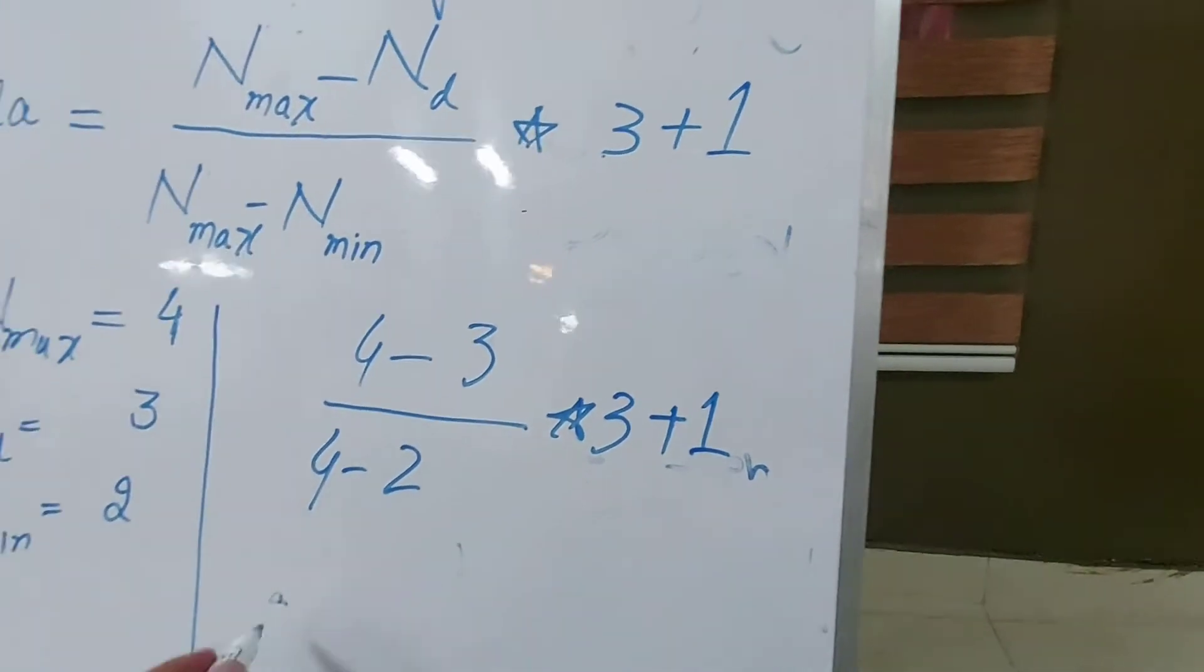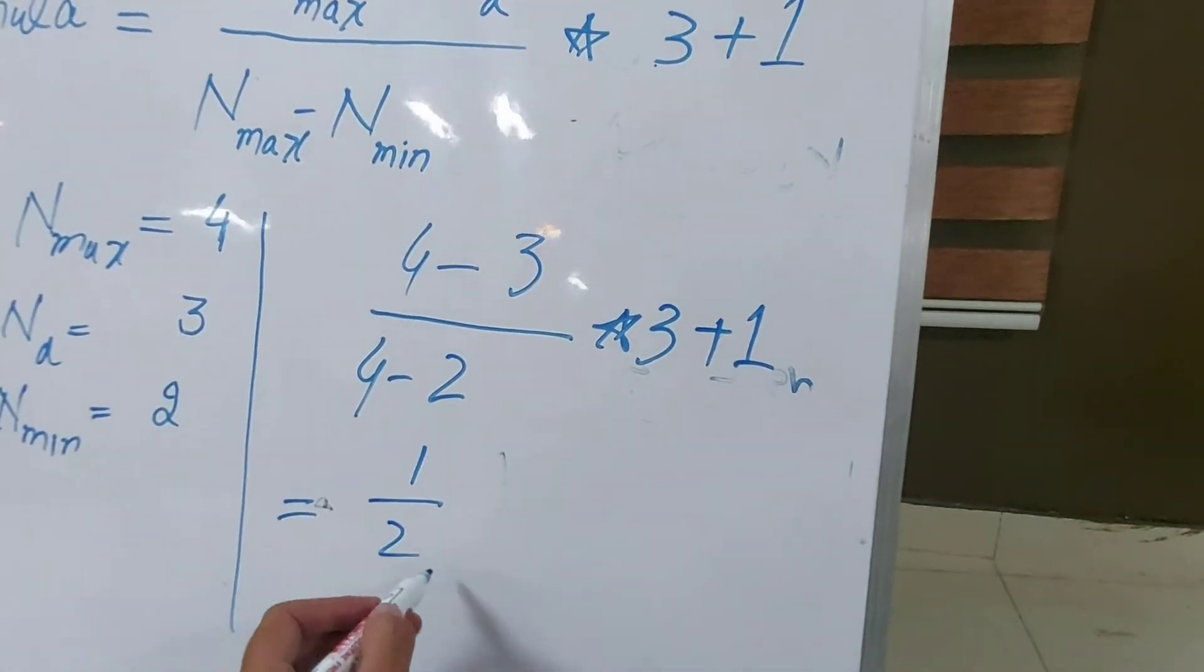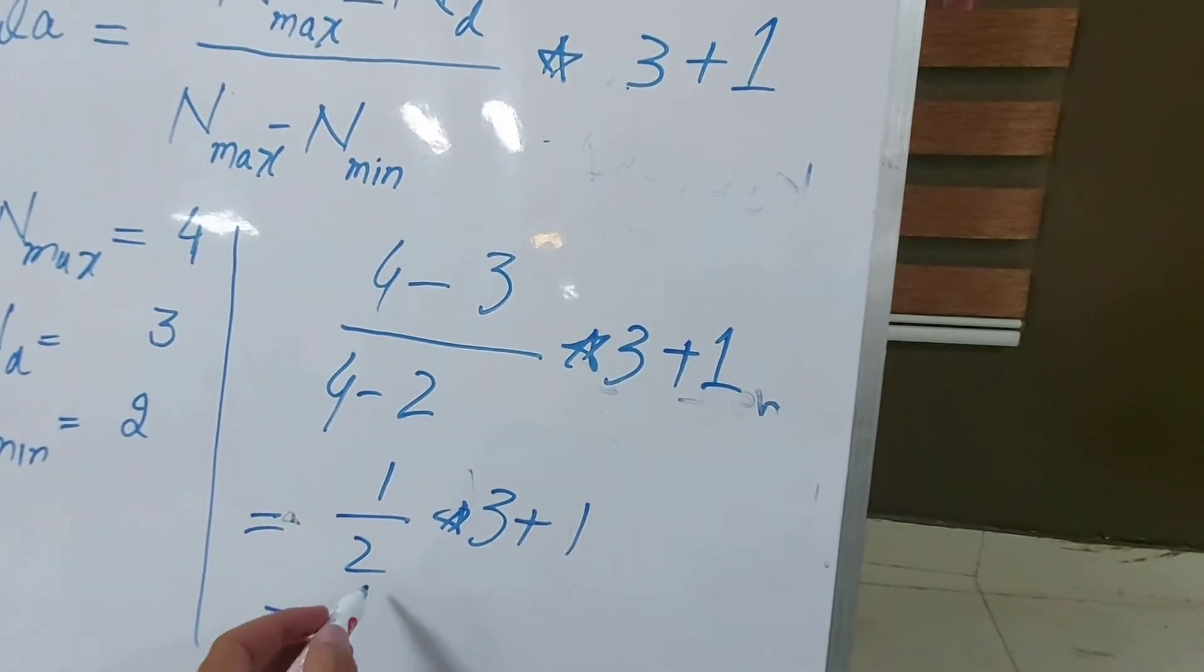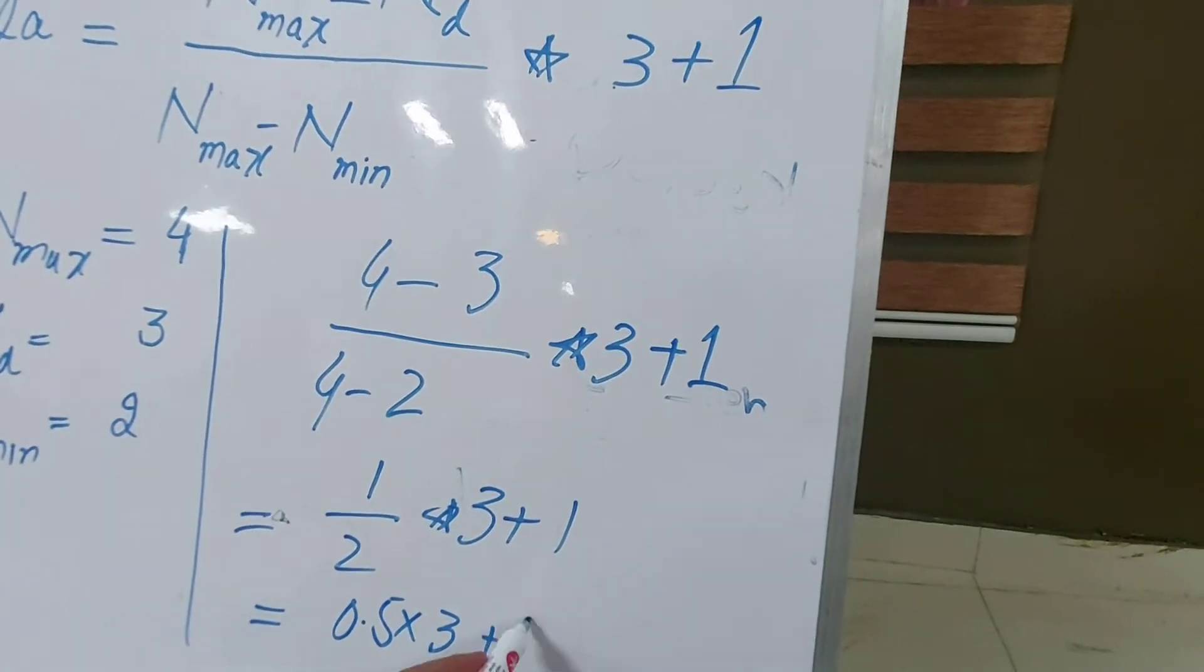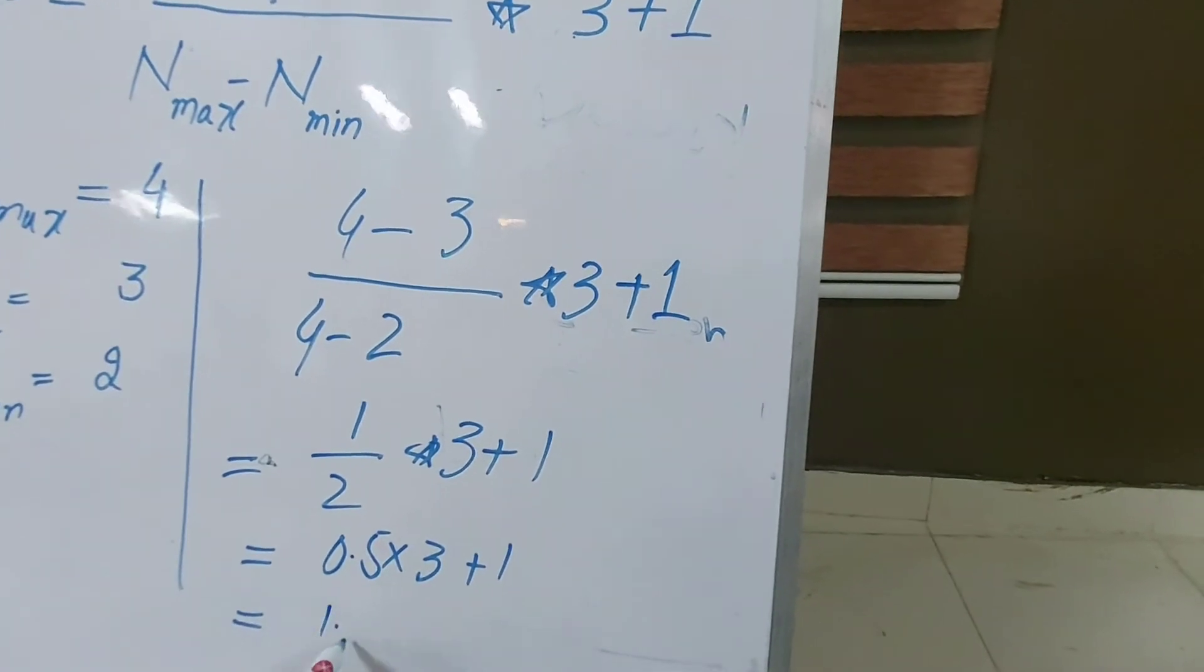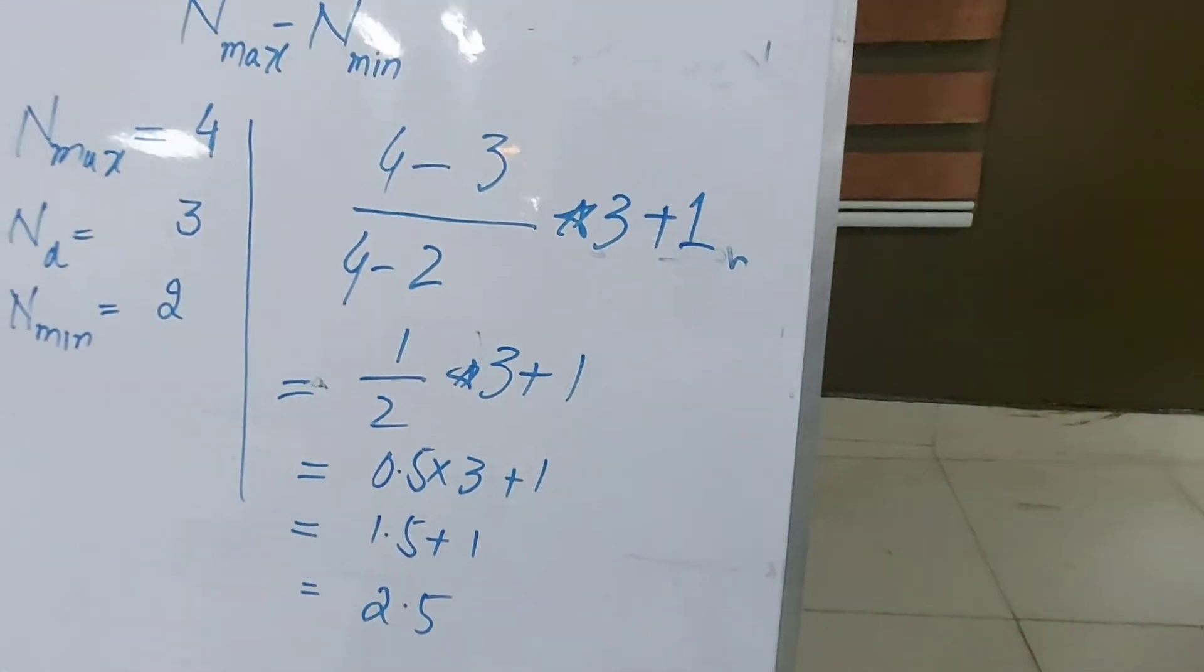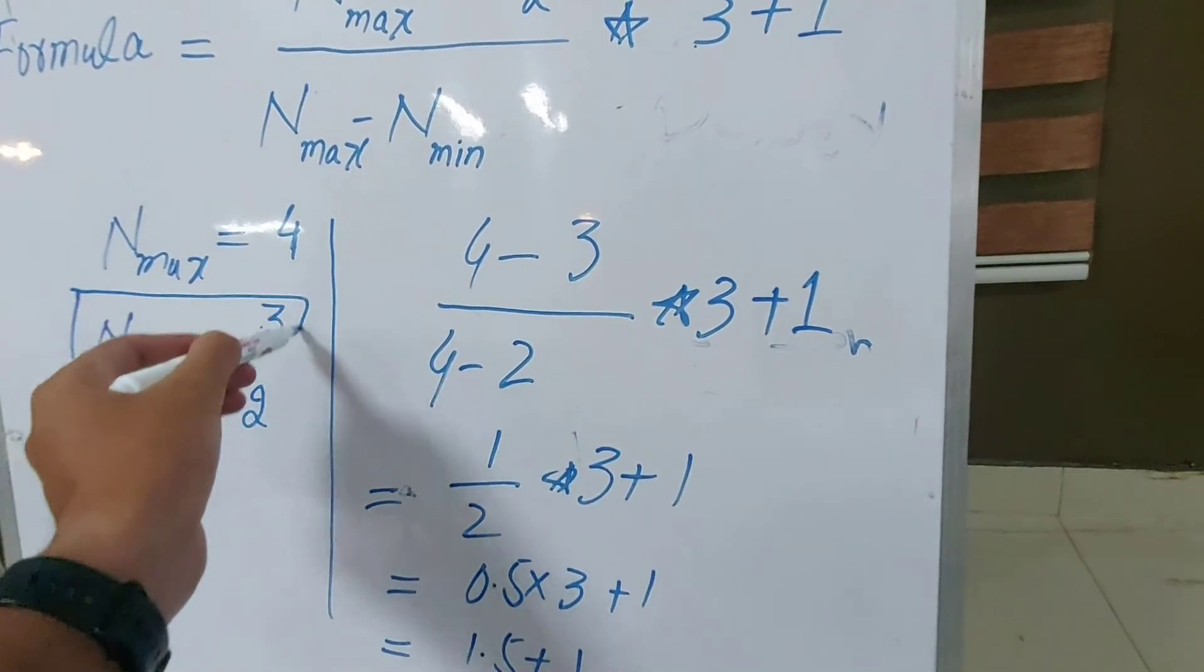So we got one divided by two, which equals 0.5. Then 0.5 multiply by three plus one, which equals 1.5 plus one, which is equal to 2.5. So if your local CGPA is three, then your German grade will be equal to 2.5.